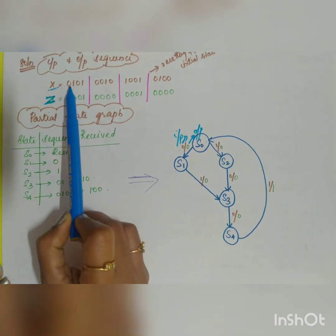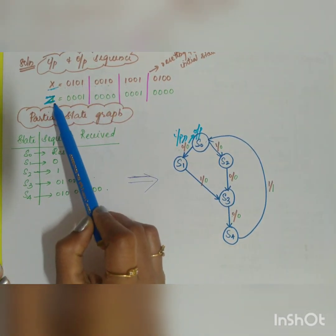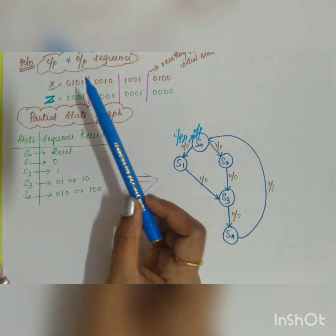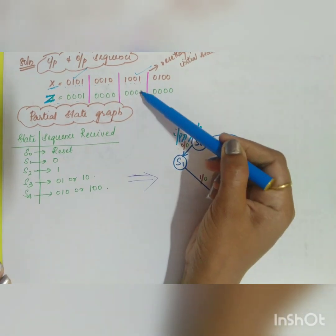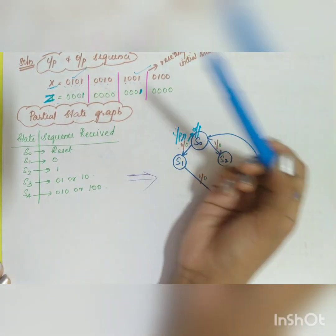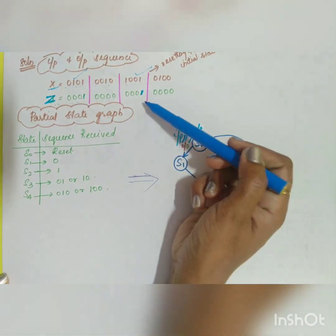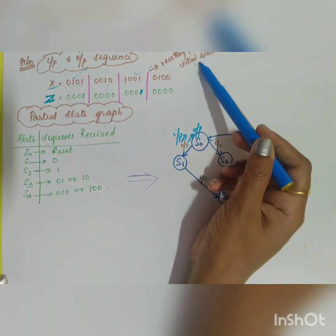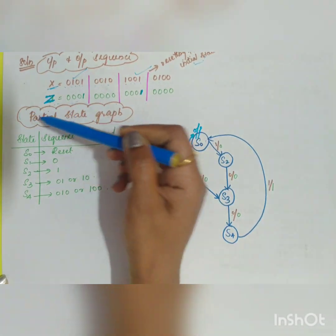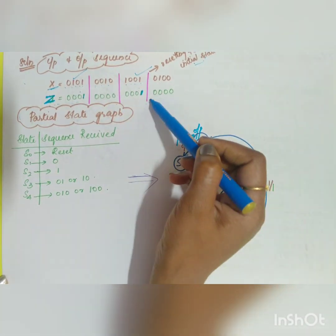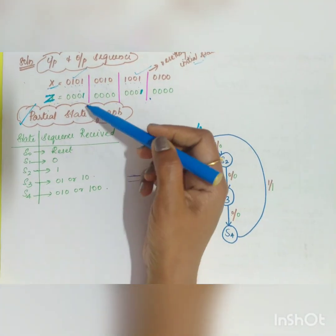The input and output sequence is written: inputs are 0101, 0010, 1010, 0100, and so on. The output z=1 occurs after sequences 0101 and 1001; z=1 for those two cases, and z=0 for all other cases. The vertical line indicates a reset to the initial state after every 4 bits. Since only two cases give output equal to 1, we can start constructing the partial state graph.